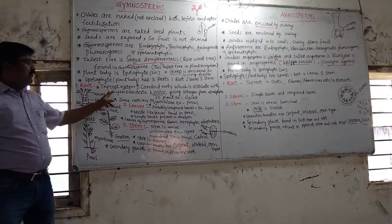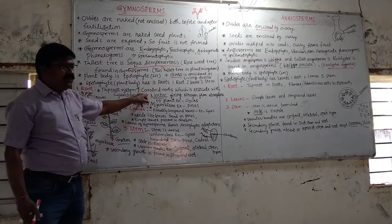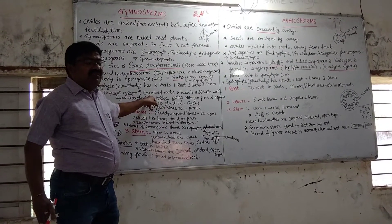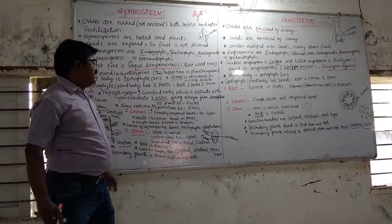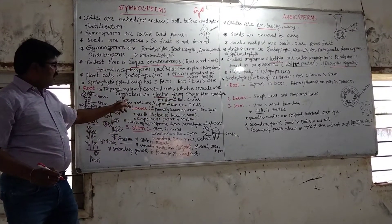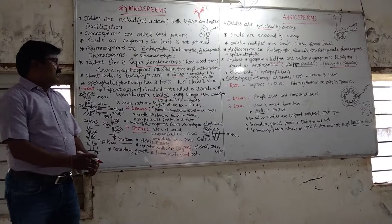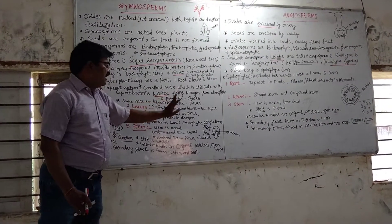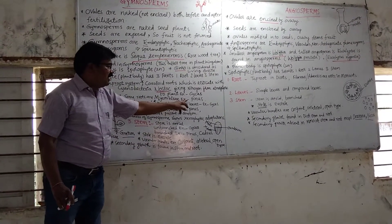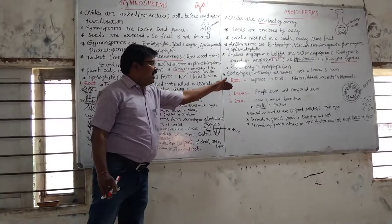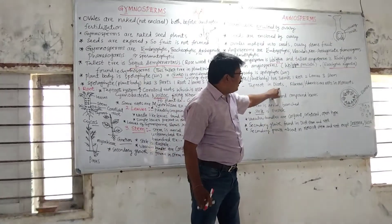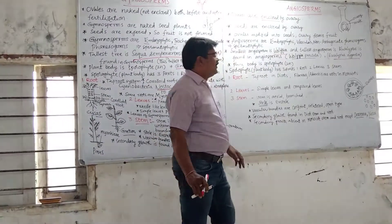The root system in gymnosperms is a tap root system. Sometimes tap roots grow opposite to the force of gravity. Some roots are associated with nitrogen-fixing bacteria and cyanobacteria — for example, cypress. Some roots are mycorrhizal. Tap root system is found in dicotyledons; fibrous root system is found in monocotyledons.